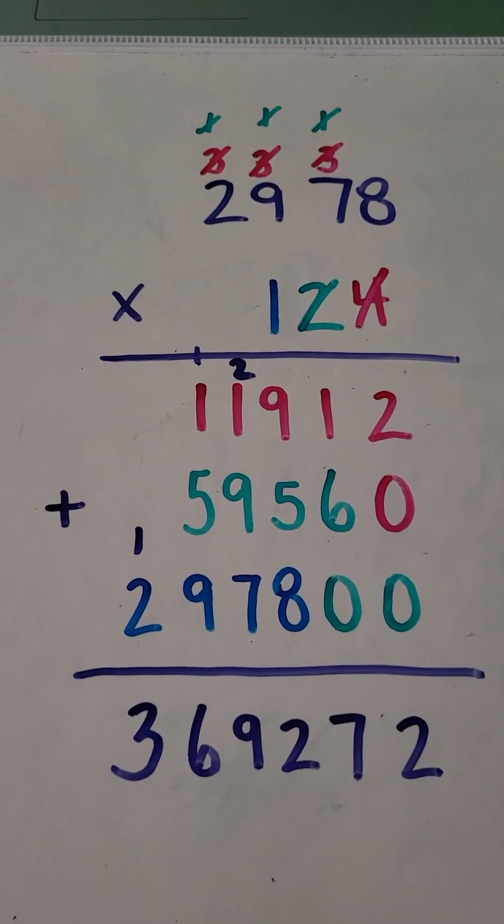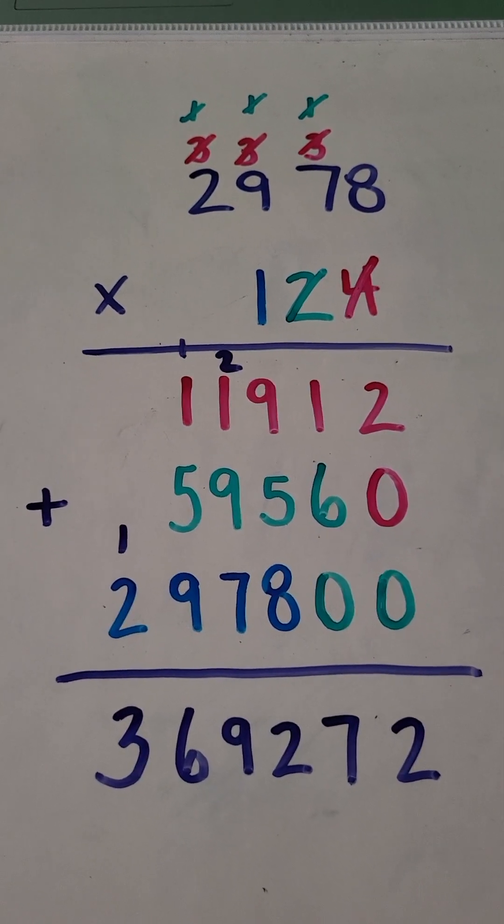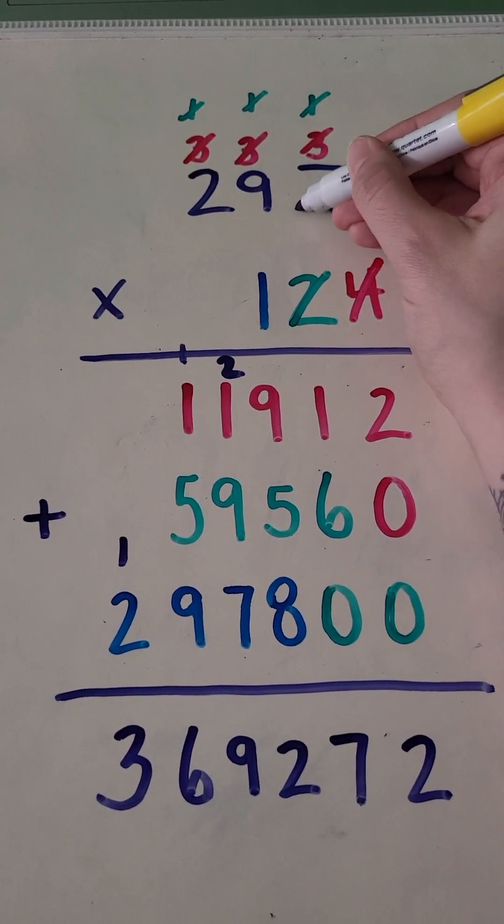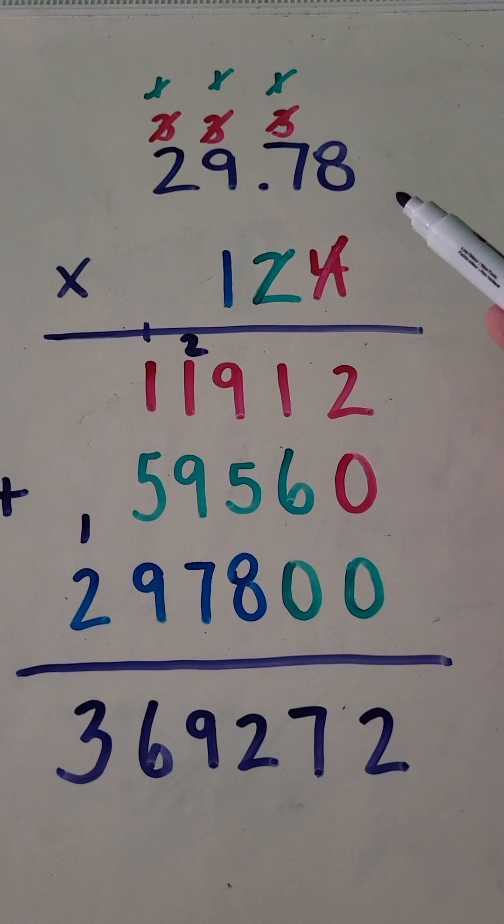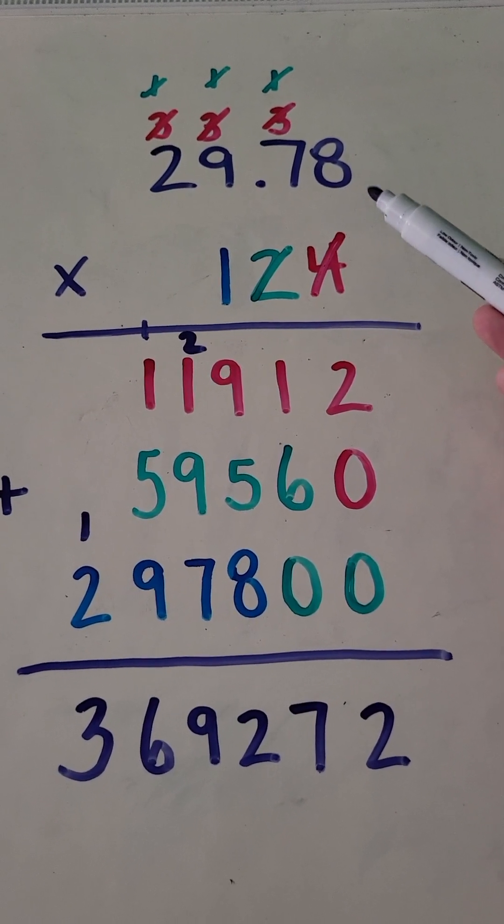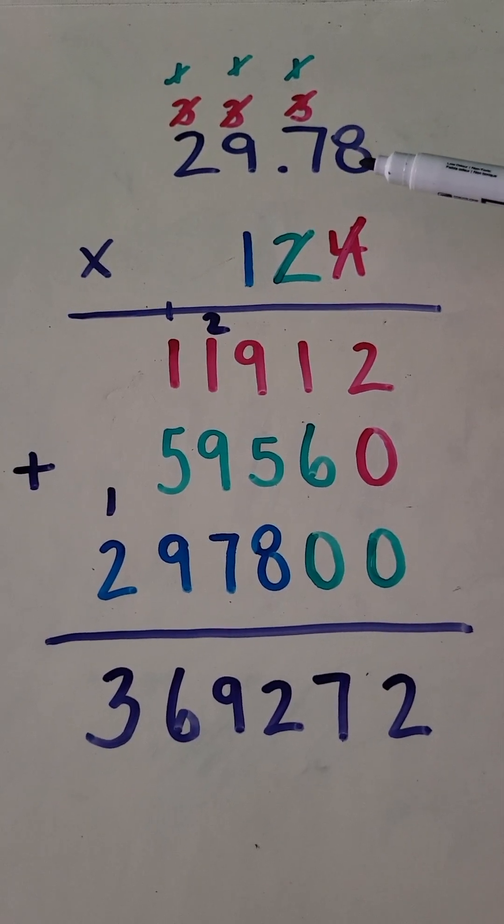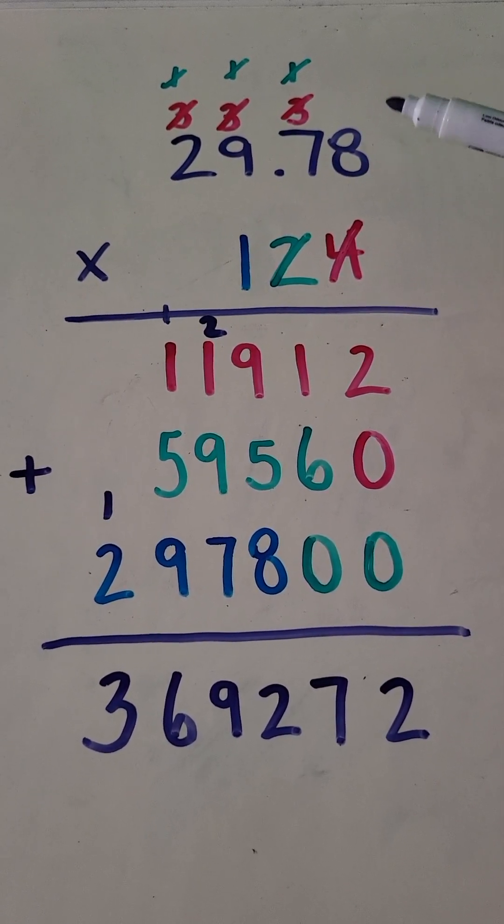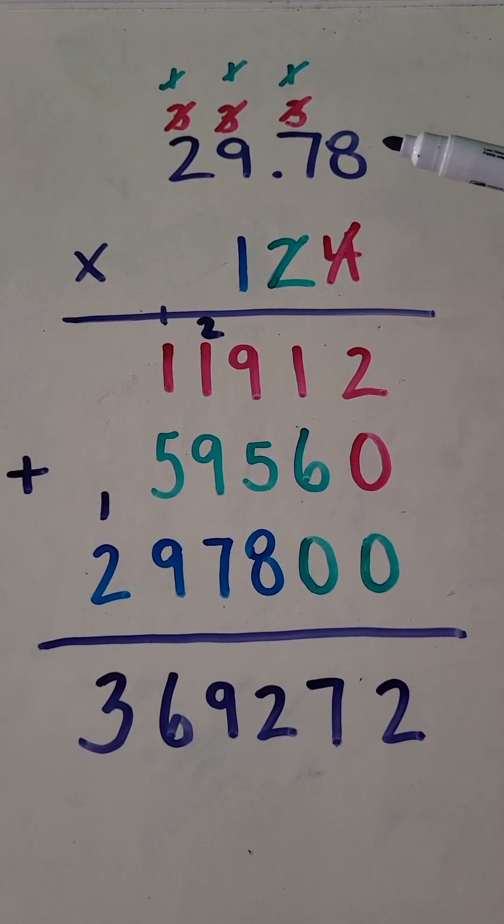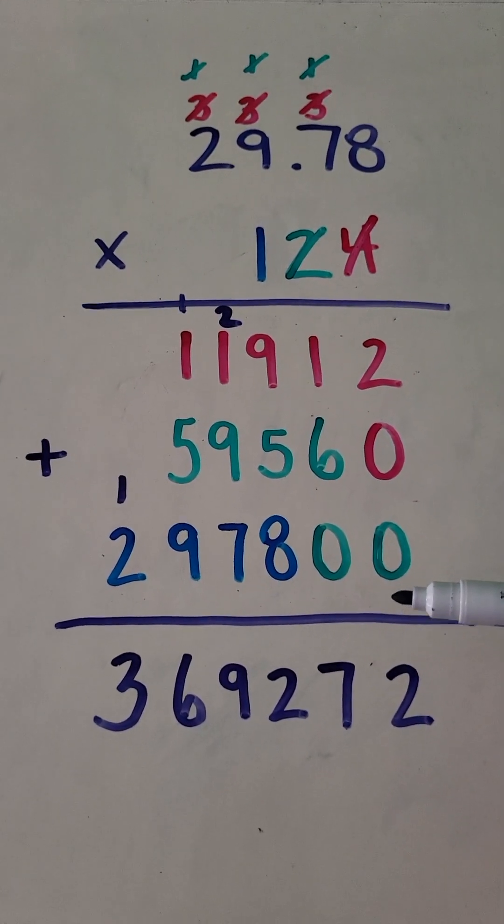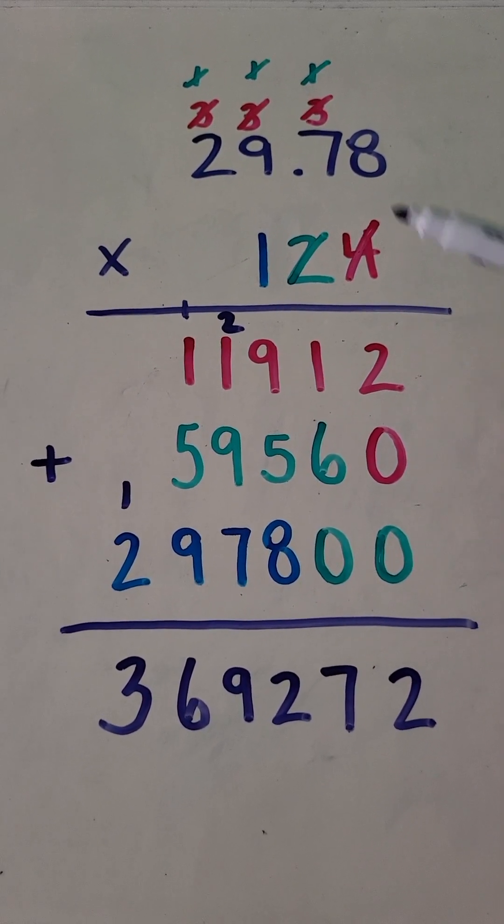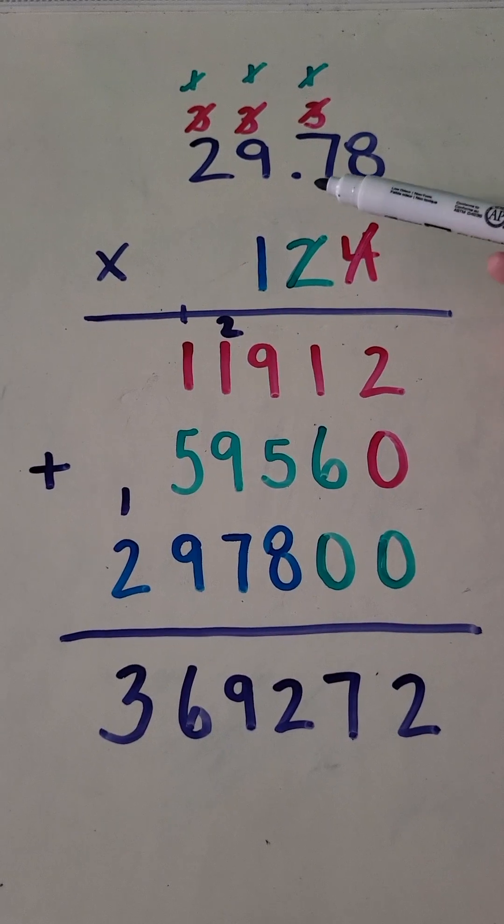But guess what? We're still not finished. Holy cow. All right. Let's keep going. Reminding myself that I originally started off with this problem, 29.78 times 124. And again, same strategy as always. However many decimals are in the question, that's how many decimal places you have in the answer.